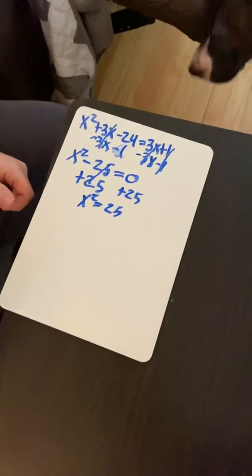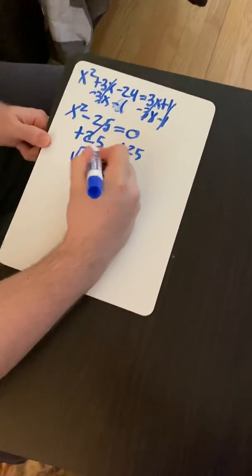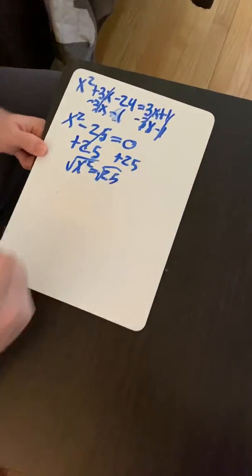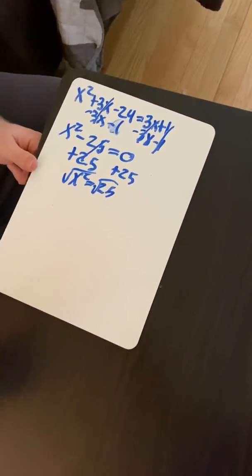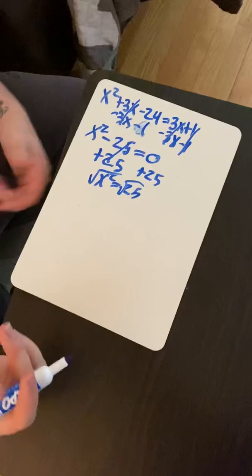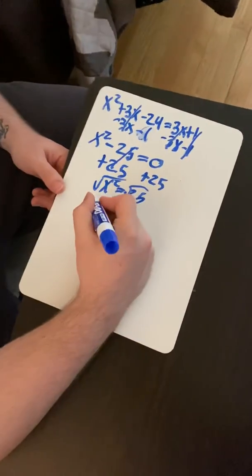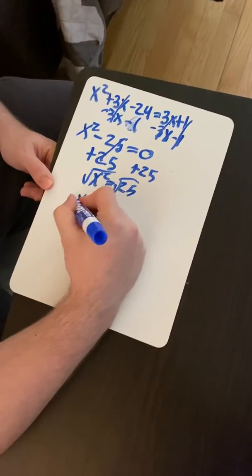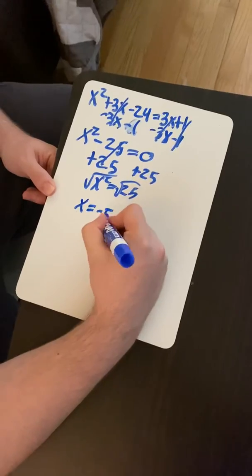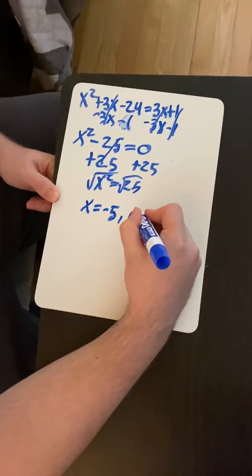We are going to square root both sides. Good girl, Luna. Remember that when we introduce the square root, we need to account for both the positive and negative possible solutions. So we end up with x equals negative 5 and positive 5.